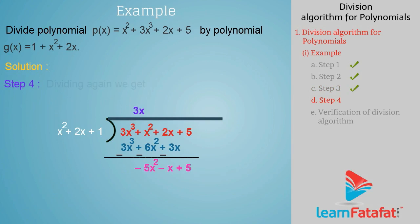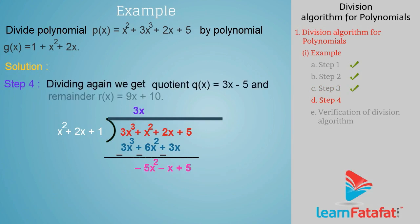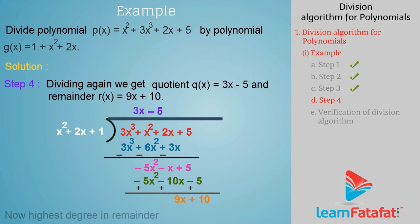Step 4: Dividing again, we get quotient Q of X equal to 3x minus 5, and remainder R of X equal to 9x plus 10. Now the highest degree in the remainder is less than the highest degree in the divisor, hence we cannot continue the division process further.